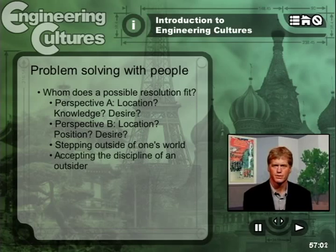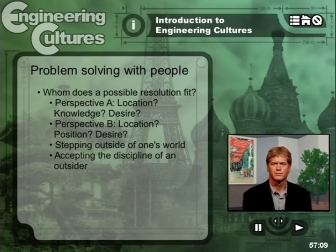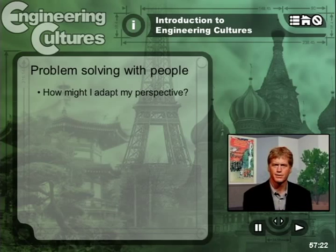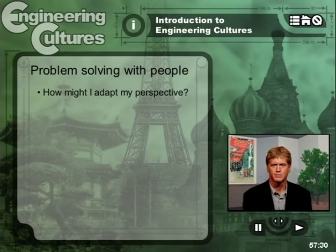Third, to the extent you find that disagreement exists or that the achievement of fit is insufficient, begin asking yourself: How might I adapt my perspective to take account of the other perspectives out there? Is there some way of accommodating myself to other perspectives rather than just demanding that the others simply recognize the inherent value and rationality of my own? Is there room for compromise among contrasting perspectives?